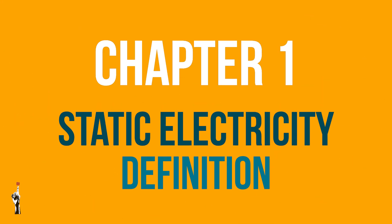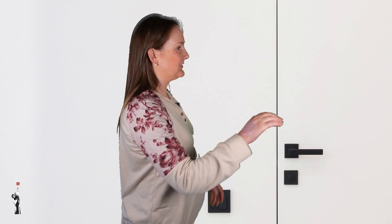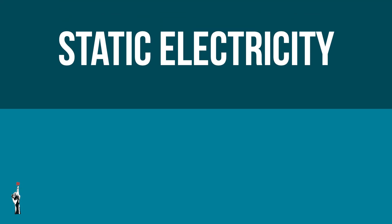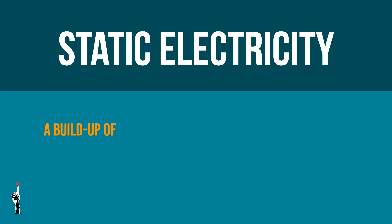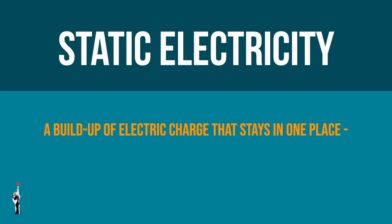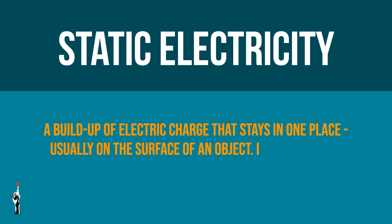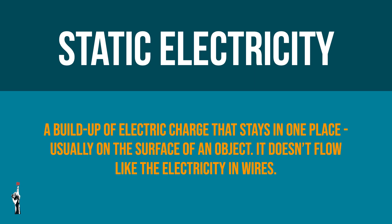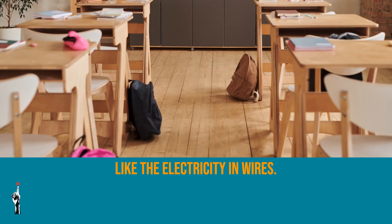Have you ever touched a door handle and felt a little shocked, or rubbed a balloon to your hair and watched it stick to a wall? That is static electricity in action. Static electricity is a build-up of electric charge that stays in one place, usually on the surface of an object. It doesn't flow like the electricity in wires.